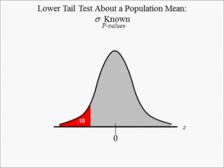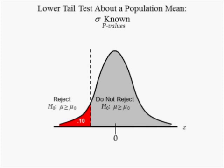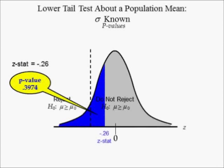Since this is a lower tailed test with a significance equal to 0.1, the lower tail of the distribution is shaded in red and labeled 0.1. This tail defines the do not reject the null hypothesis and reject the null hypothesis regions. The blue tailed probability is larger than the red tailed probability because the Z-stat of negative 0.26 has a P-value equal to 0.3974, which is larger than 0.1.